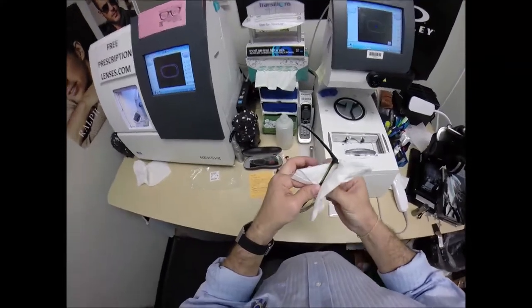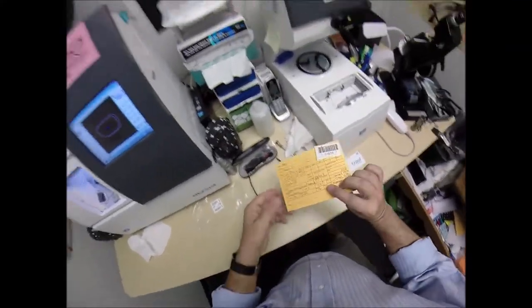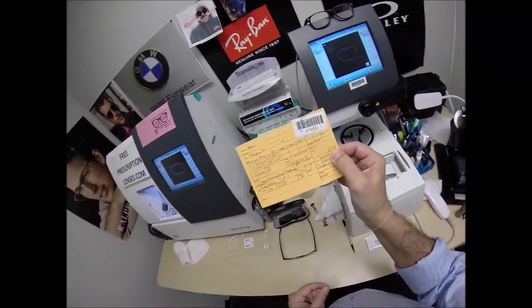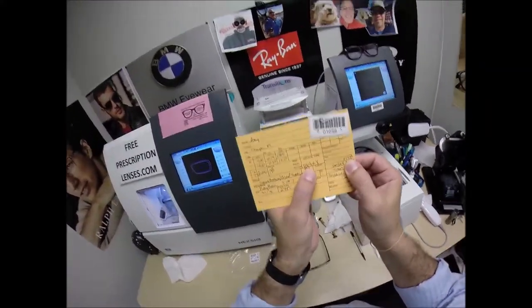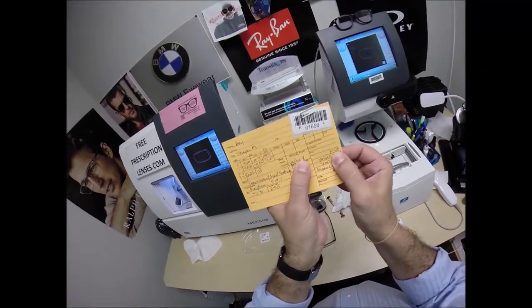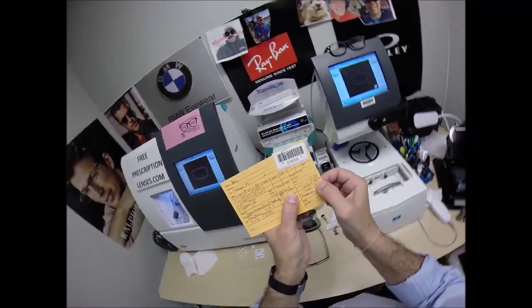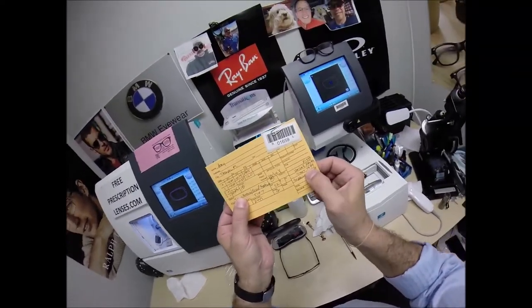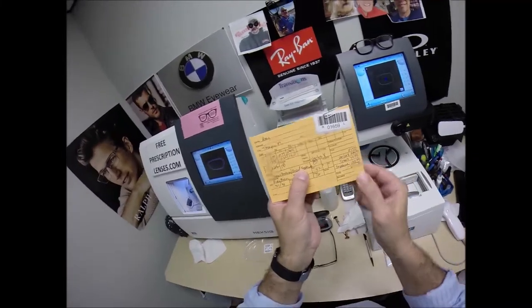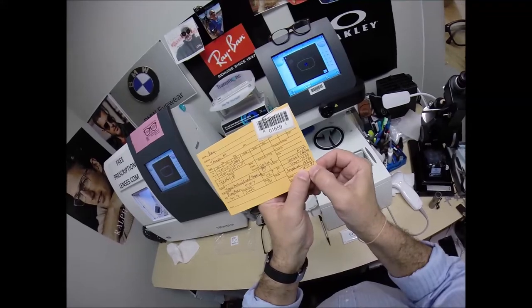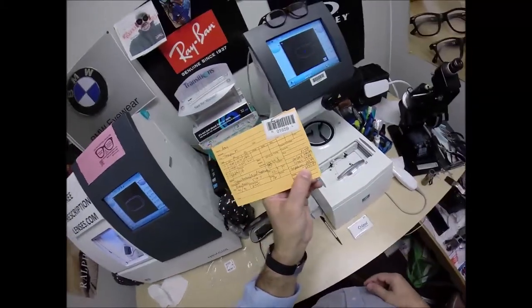But, oh, so hey, let me back up this frame. The Ray-Ban 5187 sells for $158. The top of the line Essilor Verilux X free form digital progressive lens adds $299.99. The transitions Brown at $79.99 and Crizal Sapphire is $139.99 for a total of $677.97.